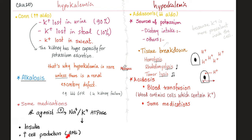Imagine you were starving and then suddenly ate a large amount of food. Your body, which has been hungry for a while, starts making cells rapidly — cell division that requires potassium. This intracellular shift of potassium leaves less outside, causing hypokalemia. More importantly, it leads to hypophosphatemia, because cells need phosphate to make ATP. All those previously hungry cells are now fed and making ATP like crazy, consuming all the phosphate, ending up with hypophosphatemia.